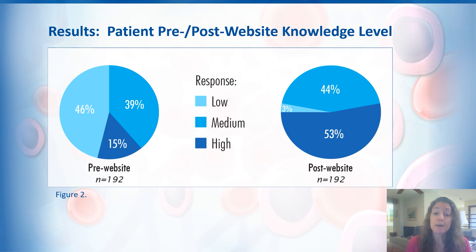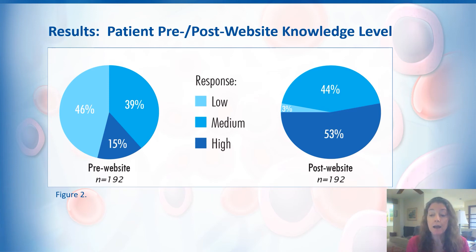In measuring pre- and post-website knowledge level, you can see the shift from low and medium — the majority being low and medium — to the majority representing a high knowledge level relative to MDS.